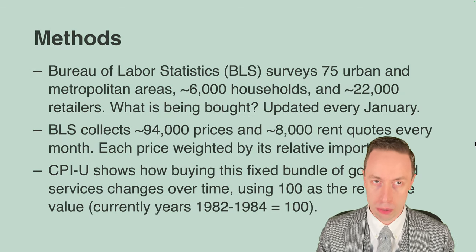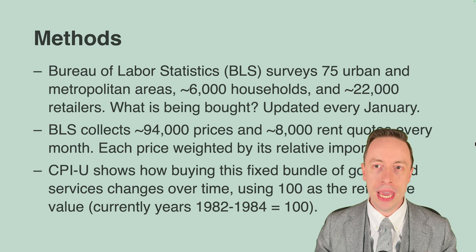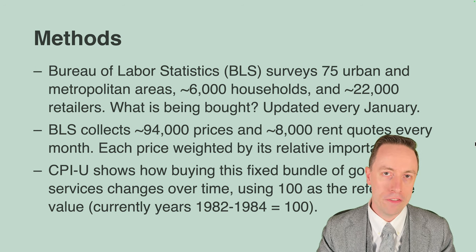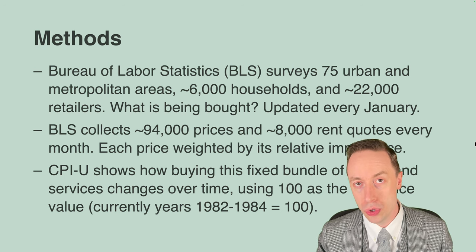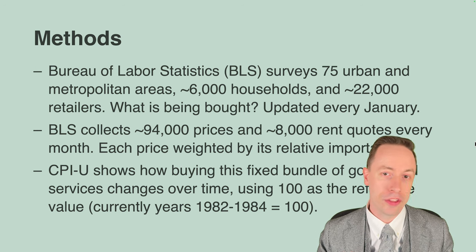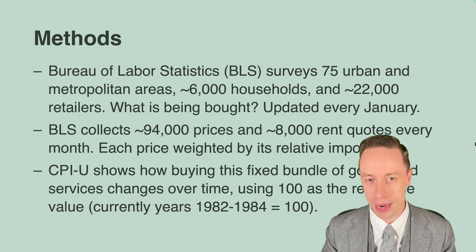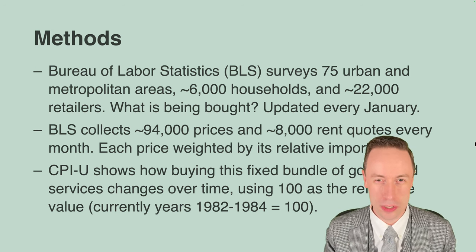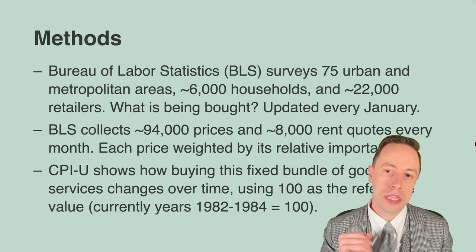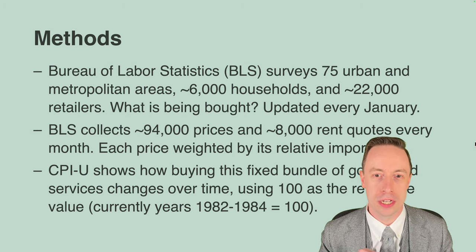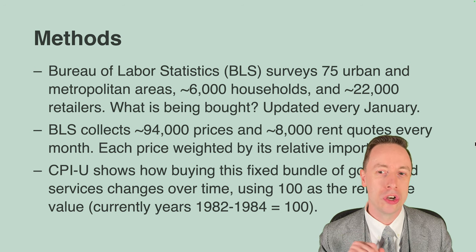Calculating the CPI is a huge project conducted by the Bureau of Labor Statistics. They survey 75 areas in the United States — urban and metropolitan areas — covering 60,000 household units and 22,000 retailers. The first thing established is what a representative consumer in the United States is actually buying. Based on the overall list, the BLS condenses that down into 94,000 prices considered representative, and since housing is such a major component of cost of living, also 8,000 rent quotes.